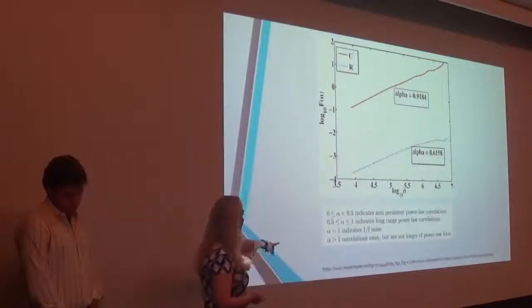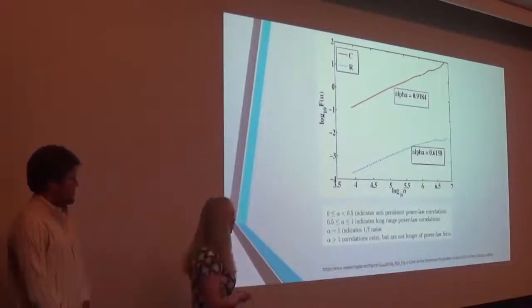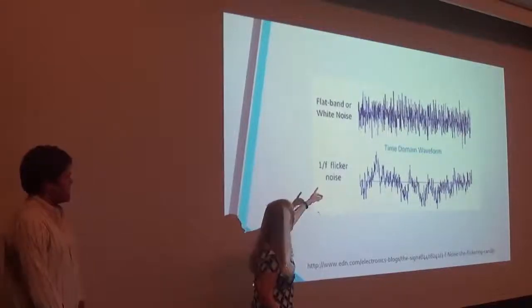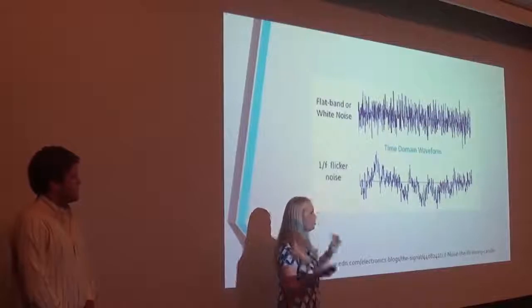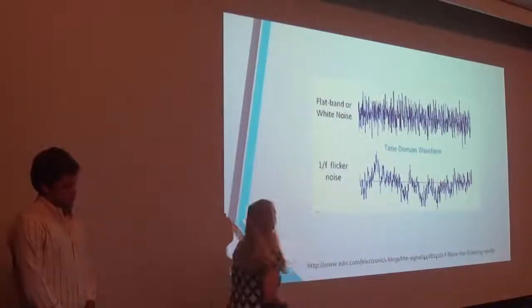So then the alpha of 1 is actually kind of the happy medium between being really variable and not so much variable. So you can see here an example of white noise, which is really messy, right? It's really hard to predict what's going on. And then this is the 1 over f noise, which corresponds to the alpha of 1, and you can start to see patterns forming in the signals.